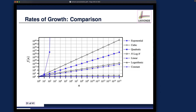We have now completed the mathematical foundation for deriving asymptotic upper bounds, or Big O, for mathematical functions. We're now going to apply all these concepts to deriving the asymptotic upper bounds on implemented Java code and algorithms — that's what we'll see in the next series of examples.